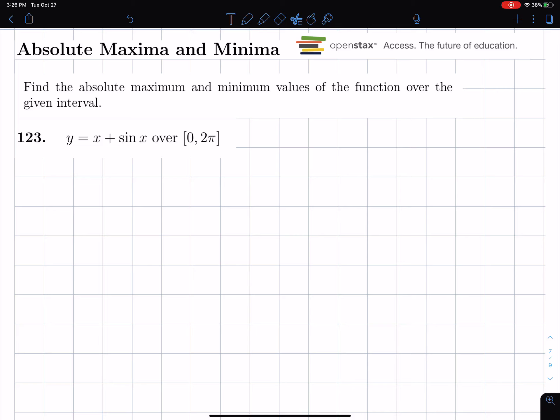Okay, in this video we're going to find the absolute maximum and minimum values of a function over a given interval. So the interval is x greater than or equal to 0 and less than or equal to 2π.